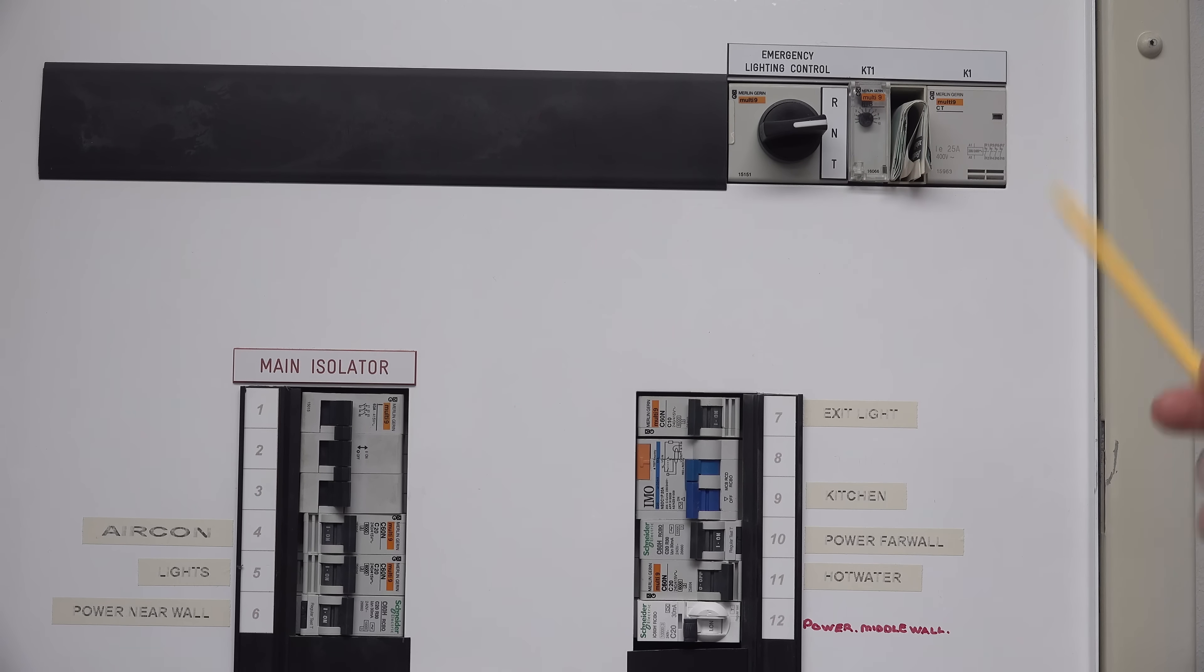And they do come around and test it every 12 months. They physically put it into test mode here. And then it switches over to battery. There's a battery in the light. So even if the power of the whole building fails, all of the exit lights will still operate. That's part of your requirement to keep your lease or whatever, even though I own this place. It's part of the Strata requirements that they have to come around and test this.